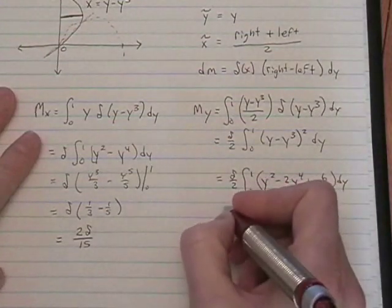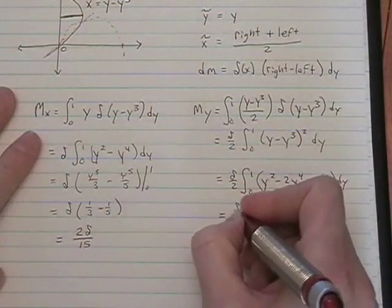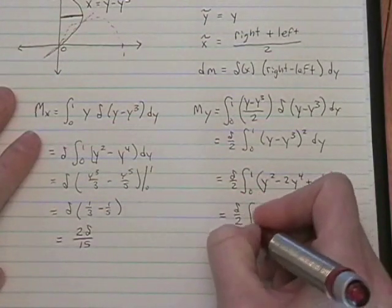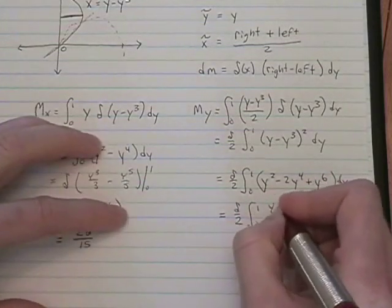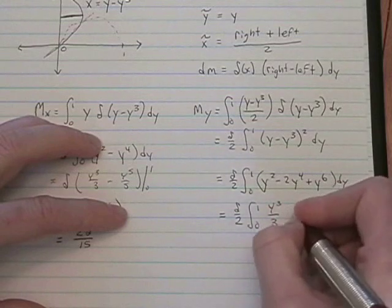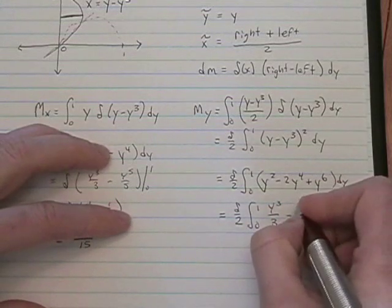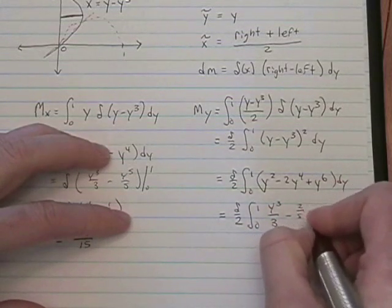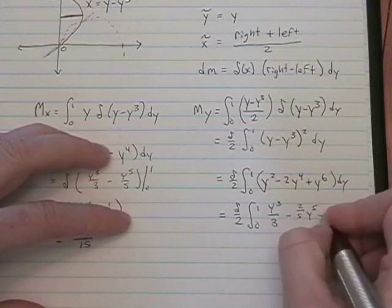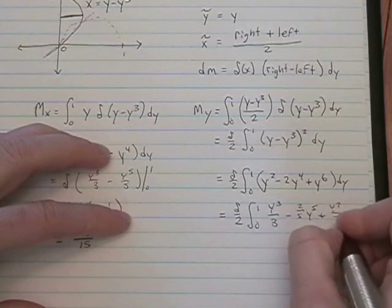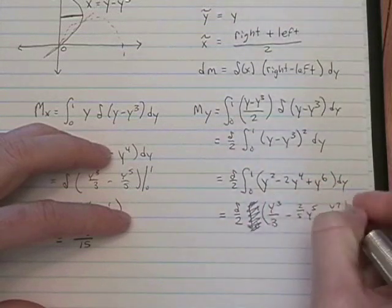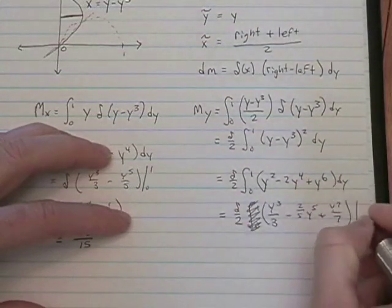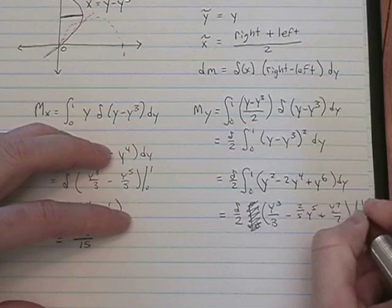Anti-derivative again, not too bad. Still got delta over 2 here. y cubed over 3 minus 2 5ths y to the 5th plus y to the 7th over 7. Once you take the anti-derivative, don't put the integral sign anymore.